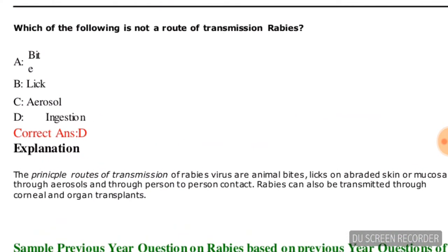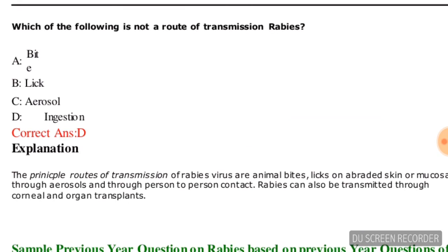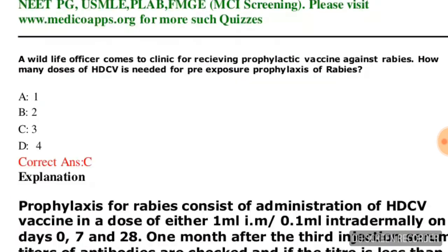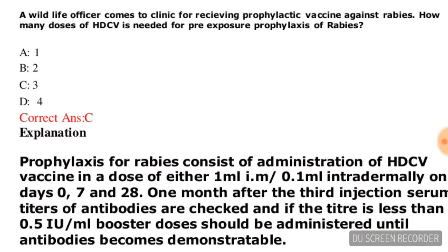Next question: which of the following is NOT a route of transmission of rabies? Options are: bite, lick, aerosol, or ingestion. The correct answer is option D — ingestion is not a route of transmission of rabies.